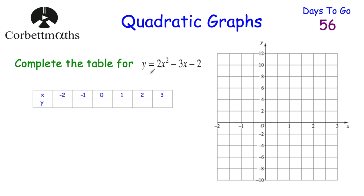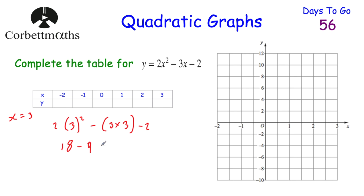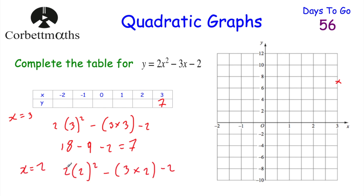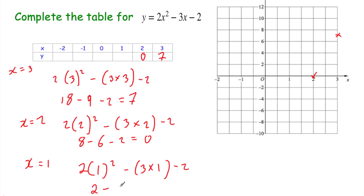Let's draw one last quadratic: y equals 2x squared minus 3x minus 2. We square the x value, double it, subtract 3 times x, then subtract 2. When x equals 3: 3 squared is 9, doubled is 18, minus 9, minus 2 equals 7. When x equals 2: 2 squared is 4, doubled is 8, minus 6, minus 2 equals 0. When x equals 1: 1 squared doubled is 2, minus 3, minus 2 equals negative 3.